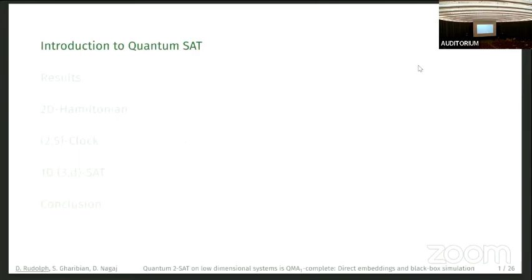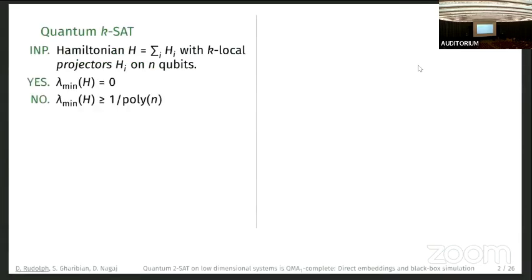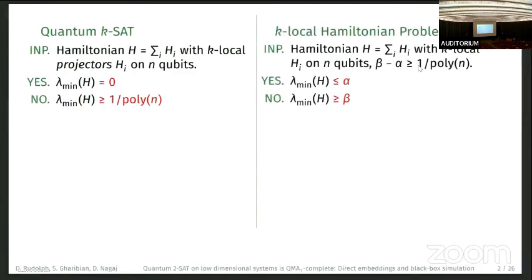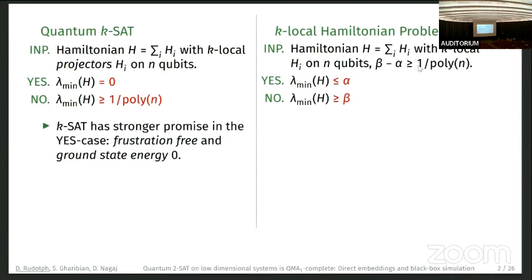Let me start with the introduction to quantum SAT. In the quantum case, the problem we have as input is a Hamiltonian H which is the sum of k local projectors, acting on n qubits in total. The question is: is the minimum eigenvalue of H zero, or is it bounded away from zero? The k-local Hamiltonian problem is defined similarly, but we are only interested in checking if lambda-minus is smaller than alpha or greater than beta. In the QMA1 case, we demand that the system is frustration-free and the ground state energy is zero.